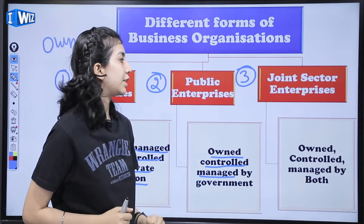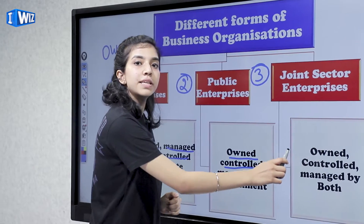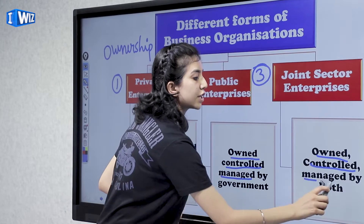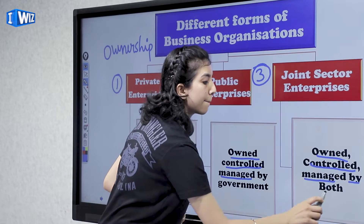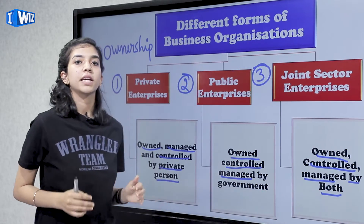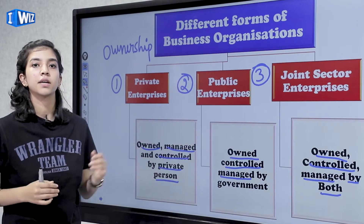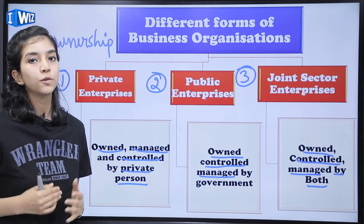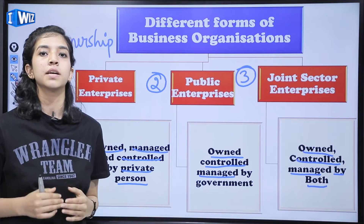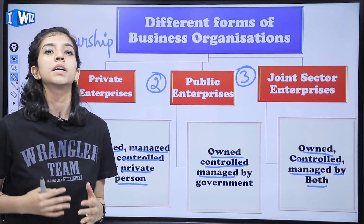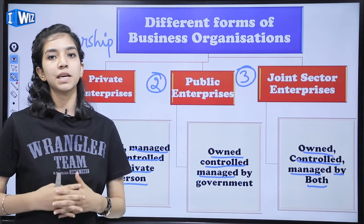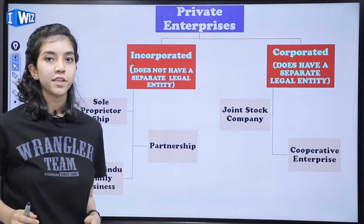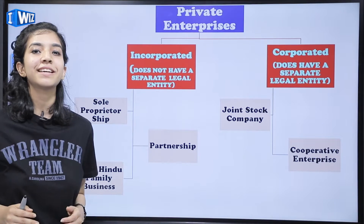Third, we have joint sector enterprises. These are owned, controlled, and managed by both private individuals as well as the government — there is a sharing of ownership between private and public. In fact, they also make management strategies together. Our chapter's focus is on private enterprises, so we are going to study it in detail.